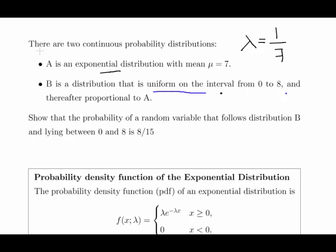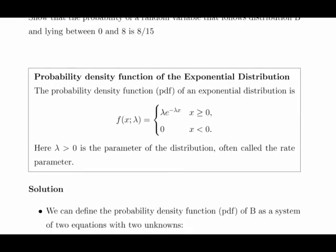B is a distribution that is uniform on the interval 0 to 8, and thereafter proportional to A. That means after 8 it becomes an exponential distribution. We need to show that the probability of a random variable that follows distribution B and lies between 0 and 8 is 8 over 15.